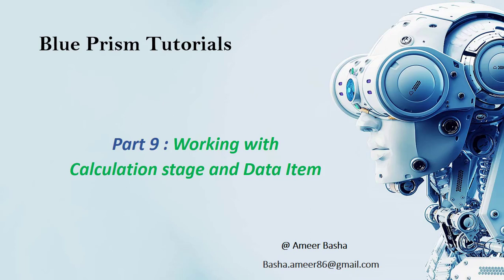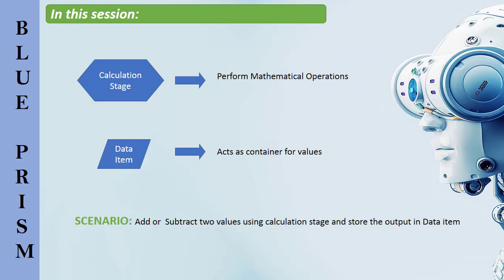Hi, welcome to Blue Prism Tutorials. My name is Amir. This is part 9, working with calculation stage on data items. In this session, we will learn how to work with calculation stage and also we will learn how to store values in data item stage. A calculation stage performs basic mathematical operations on values, and the results returned from a calculation stage are stored in stages known as data items. Data items are parallelogram-shaped stages that act as a container for values such as number, text, and dates.